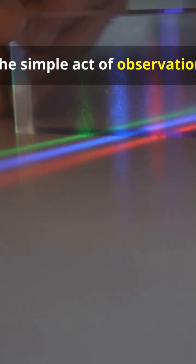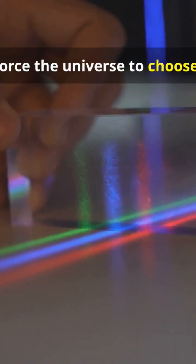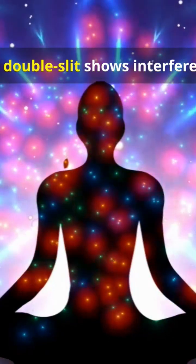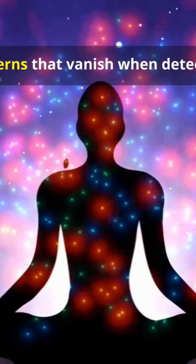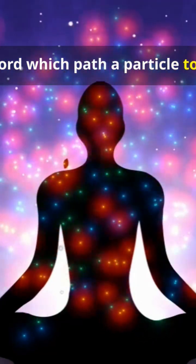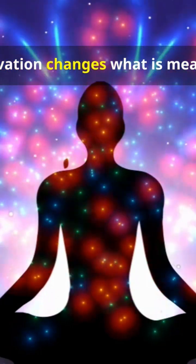But the simple act of observation can force the universe to choose. Superposition becomes a single outcome. This is not metaphor. It is experiment. The double slit shows interference patterns that vanish when detectors record which path a particle took. Observation changes what is measured.